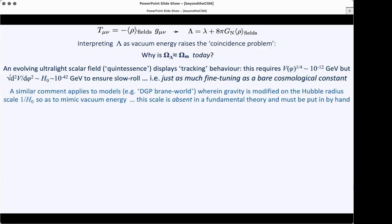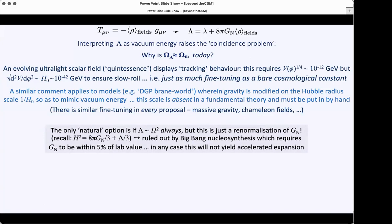The same comment applies to models in which you modify gravity on some scale. For example, you could say maybe gravity is weak today because it propagates in more than our 3 plus 1 space-time dimensions, and that's why the other interactions are so much stronger than gravity. But the only natural scale in gravity is the Planck scale, which is 10 to the 19 GeV, some tiny number like 10 to the minus 34 centimeters or something. But we want this to be important cosmologically. So we have to say that gravity is modified on the Hubble radius. It's the same fine-tuning. We are putting that scale in by hand.